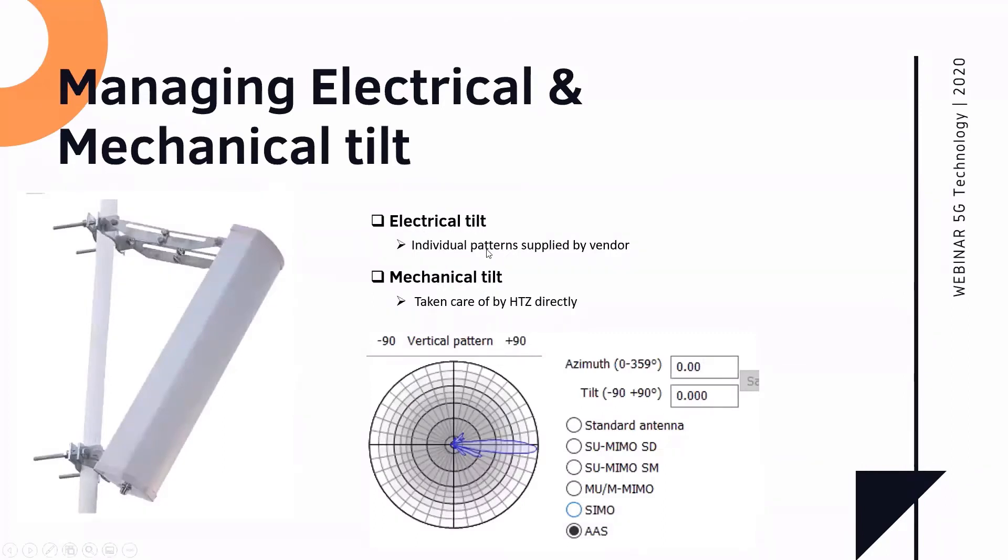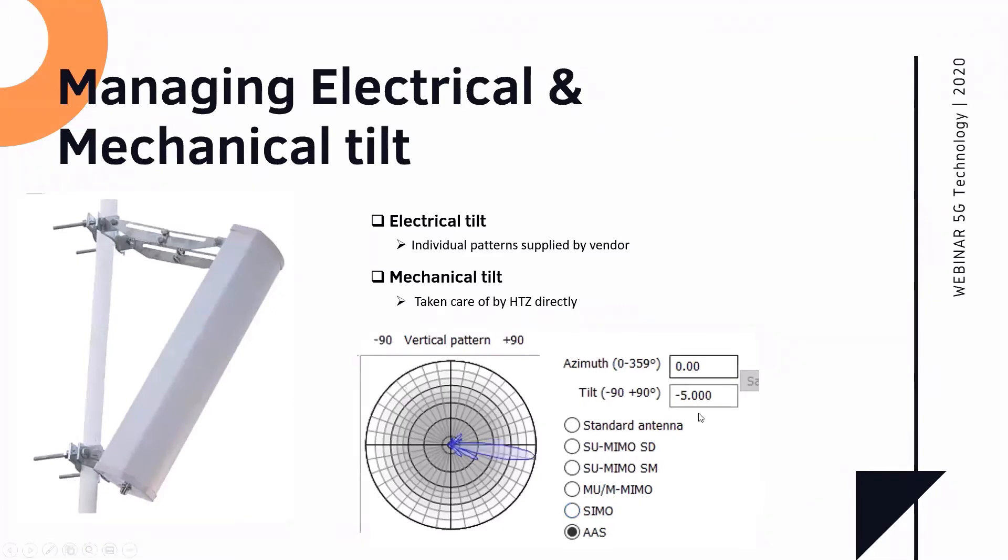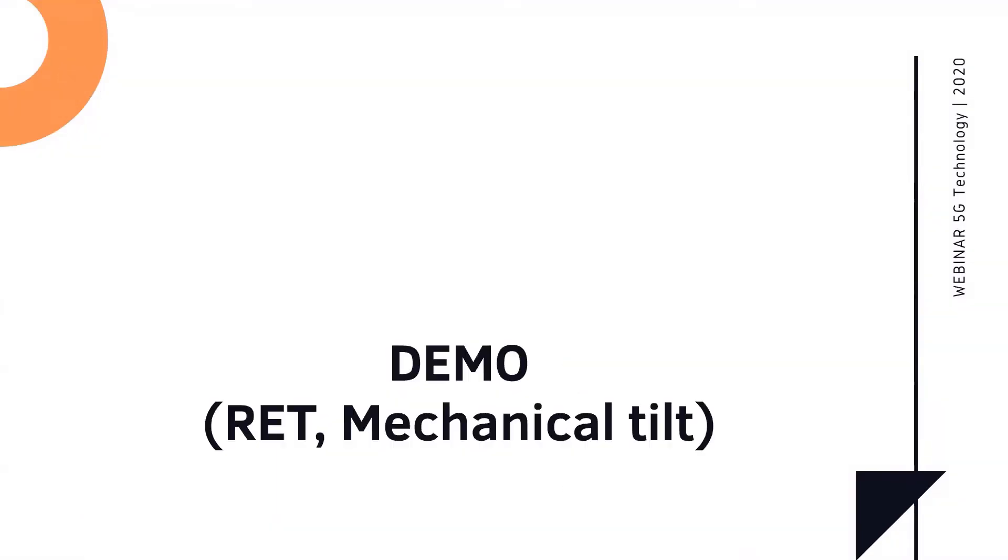So electrical tilt, the individual patterns need to be supplied by the vendor. And the mechanical tilt can be taken care of by the user directly. So you see this has a tilt of zero, there's no mechanical, it's zero. And you can see the antenna pattern is already tilted down by roughly two degrees or two and a half. It's already tilted down. Now you can add on top of this a mechanical tilt, five degrees. This is further down tilting. So I want you to be careful with down tilting, with mechanical tilting and electrical tilting. They're not the same. So you need to manage them properly, as I showed you.